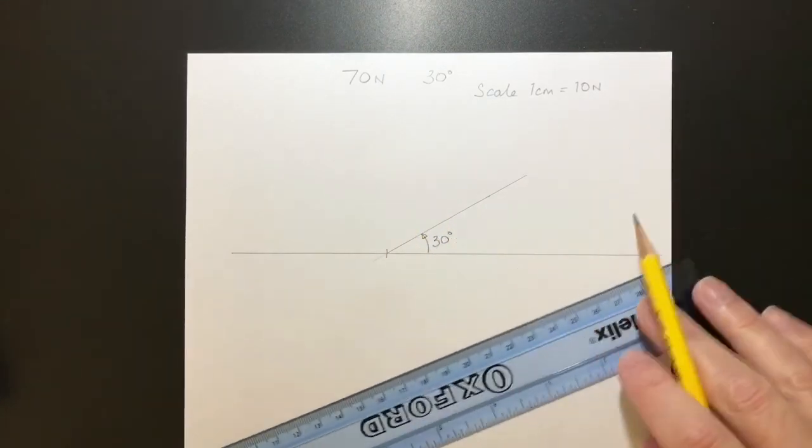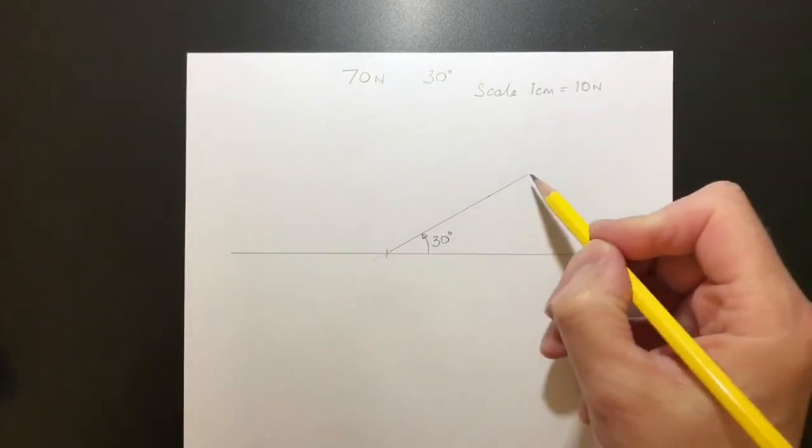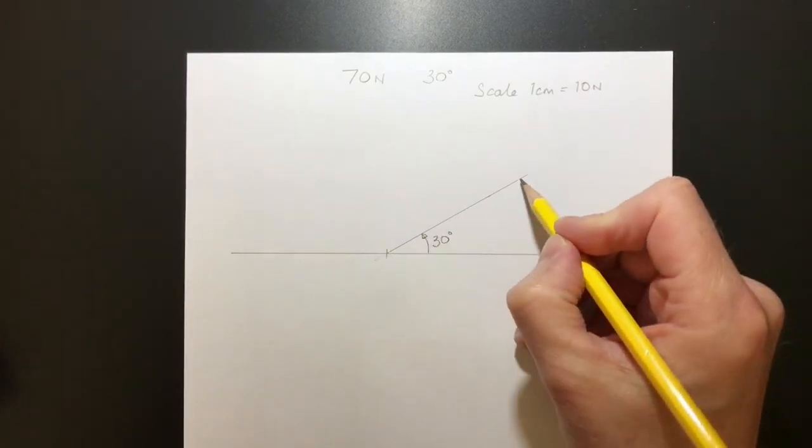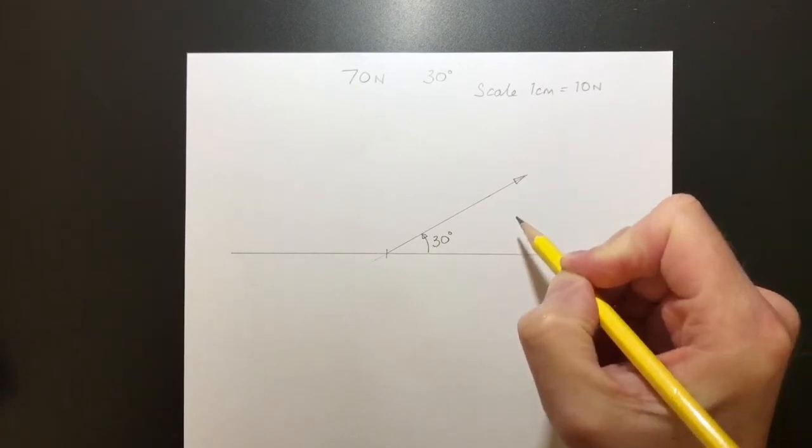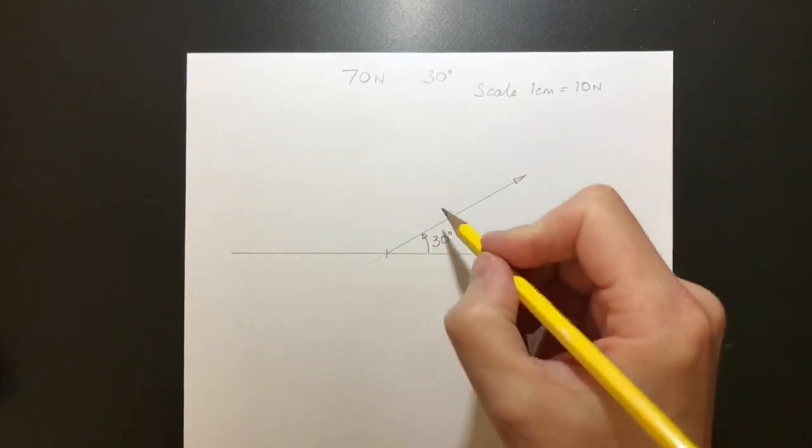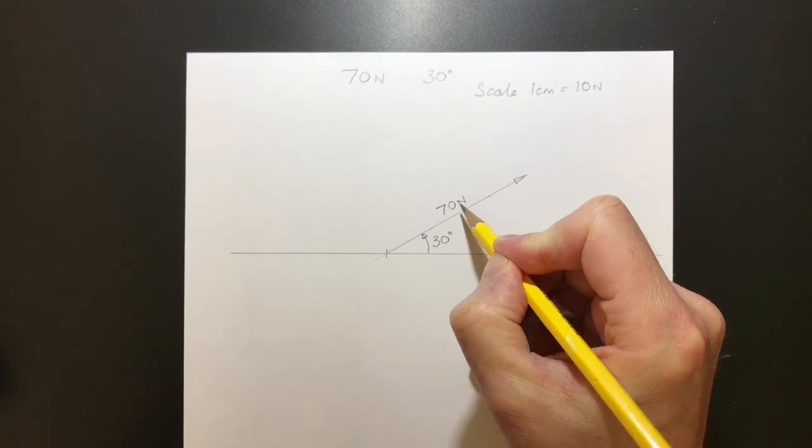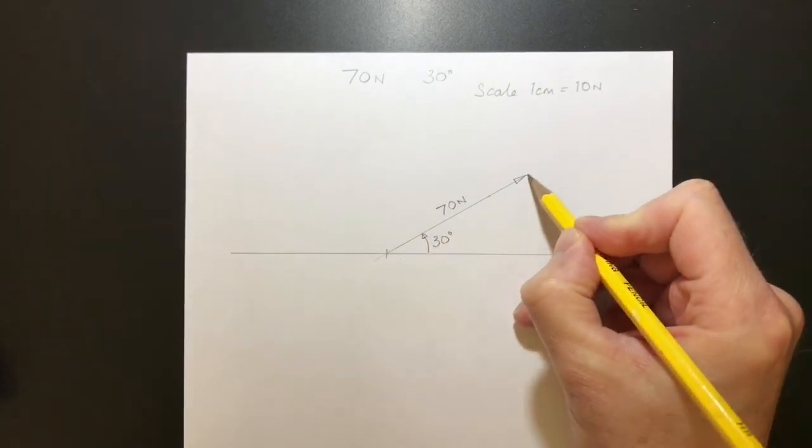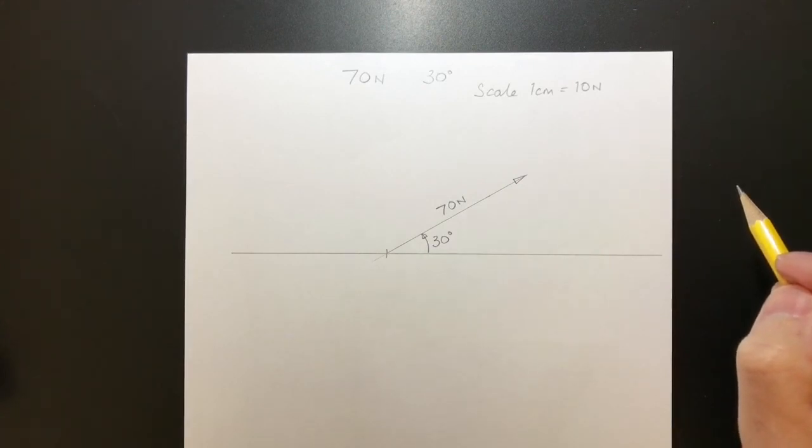Now there's one last thing to do here, and that's to communicate which direction that force is acting. I'm going to do that by placing an arrow on the end of the line. So there is our 70 newton force acting at an angle of 30 degrees. And that's it.